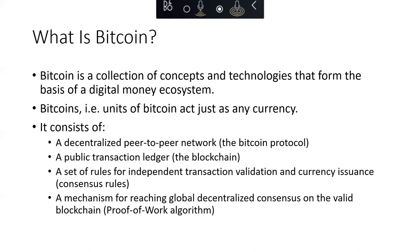Unlike traditional currencies like the dollar and the euro, Bitcoin is entirely virtual. There are no physical coins, paper money, or even digital coins — the coins are implied in transactions that transfer value from sender to recipient. Users of Bitcoin own private keys that allow them to prove ownership of Bitcoin in the network. With these private keys, they can sign transactions to unlock the value and spend it by transferring the currency to a new owner. Private keys are often stored in a digital wallet on each user's computer or smartphone. Bitcoin is a distributed peer-to-peer system with no central server or point of control.